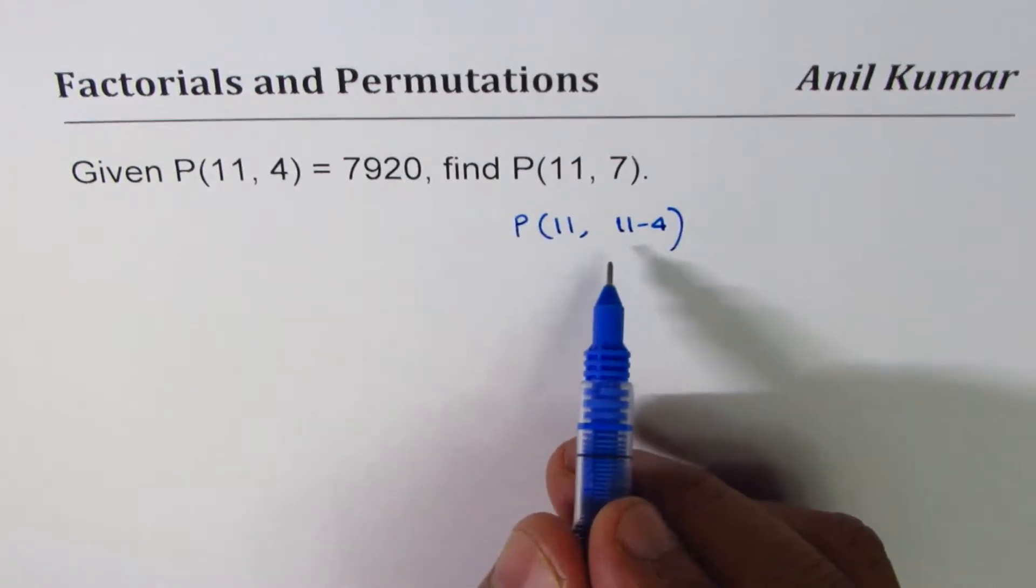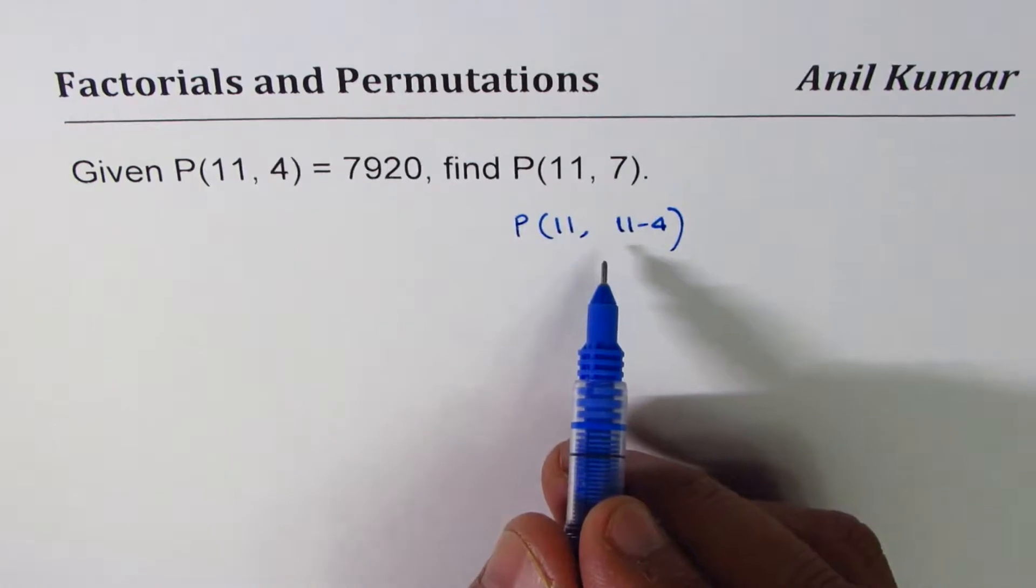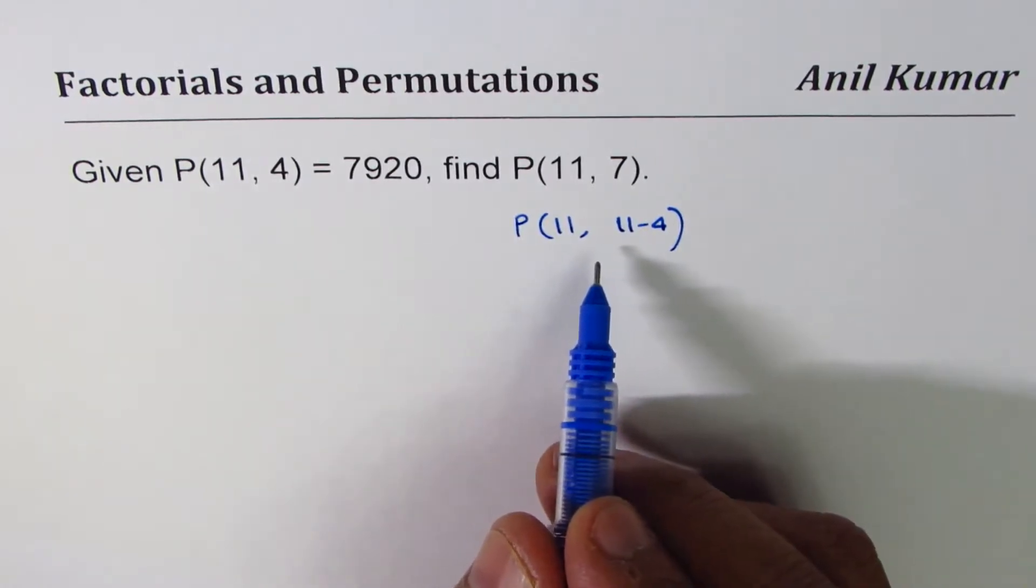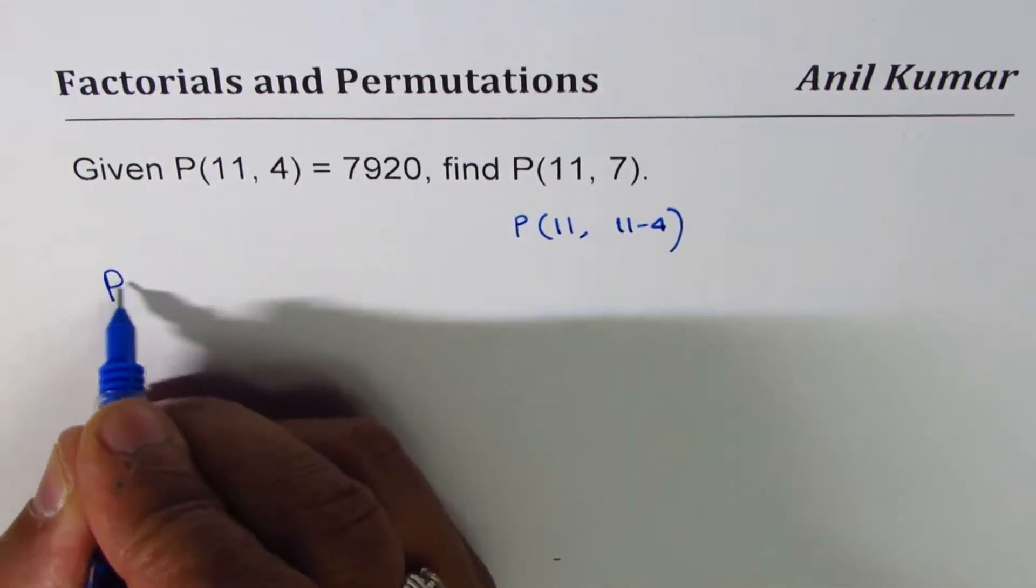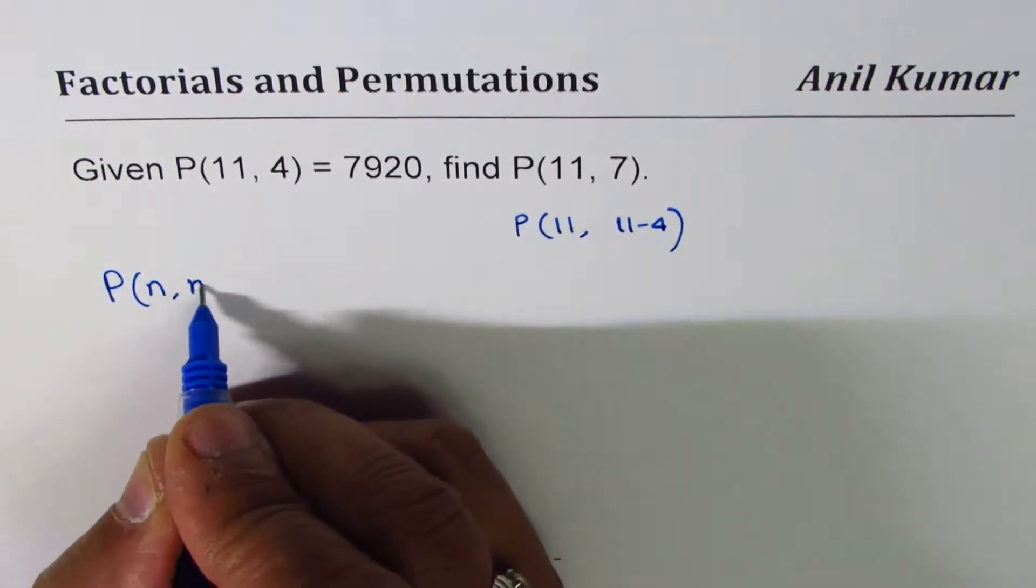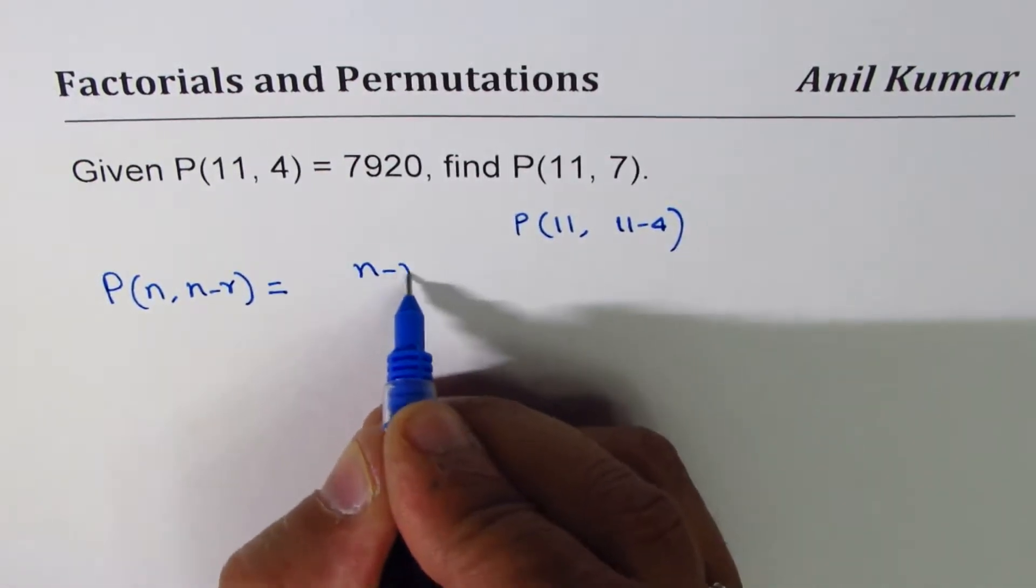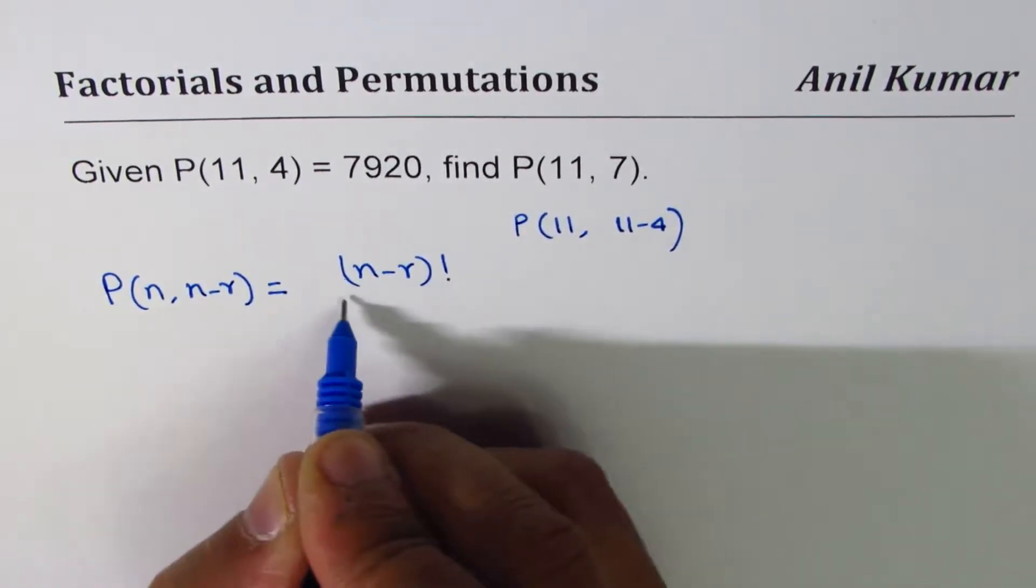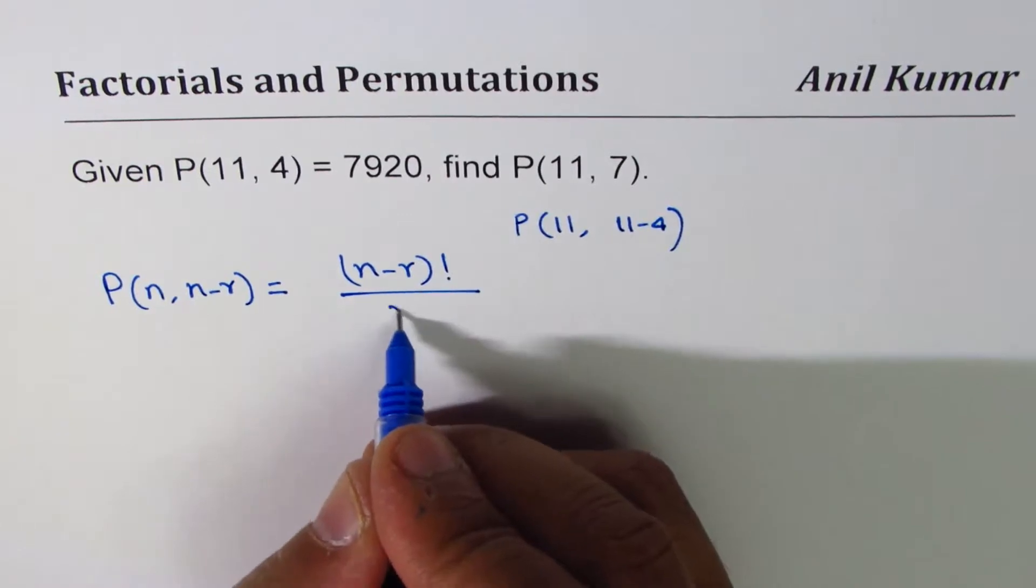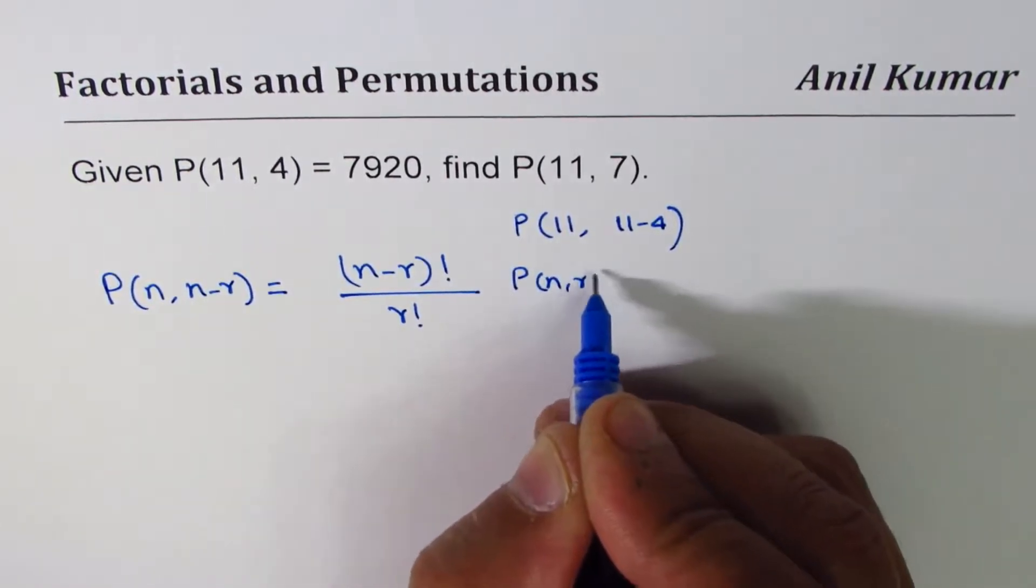We have a formula which helps us to evaluate such permutations. The formula here is that P(n, n-r) is equal to (n-r)! divided by r! times P(n,r).